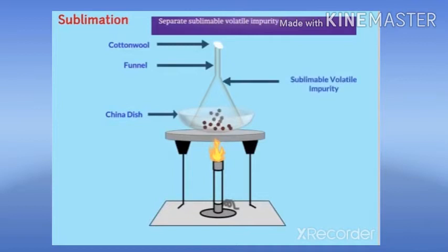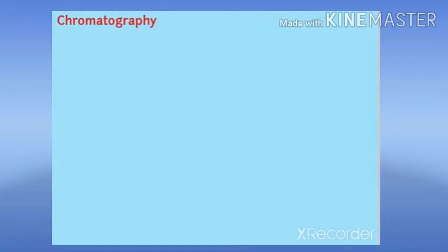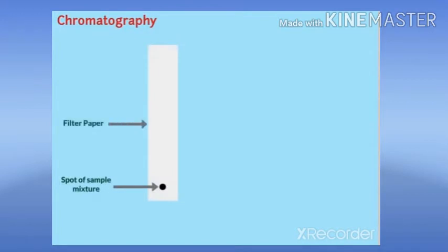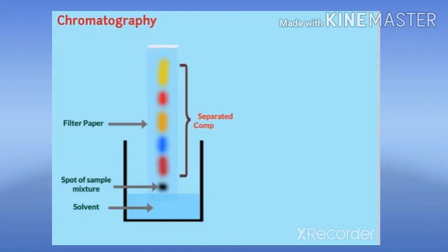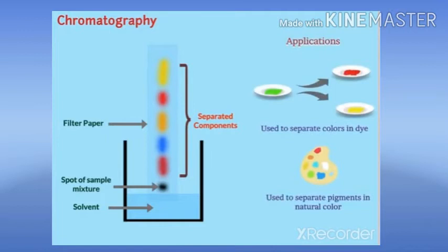Sublimation. This technique is used to separate sublimable volatile impurities from non-sublimable volatile impurities by the process of sublimation. Chromatography. In this method, a spot of the sample mixture is applied on filter paper, and then the filter paper is placed in a solvent. Components in the mixture which are more soluble in the solvent rise faster on the filter paper, thereby separating all components from the sample.